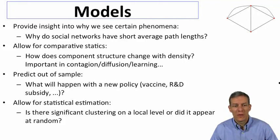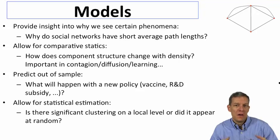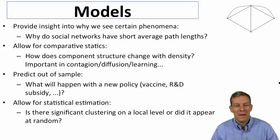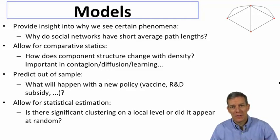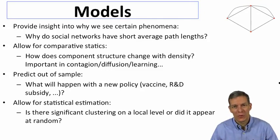The models will also allow for statistical estimation. If we want to understand, for instance, is there significant clustering—are my friends friends with each other—does that happen because of some social force or is it happening just at random? We can test models, so we can take models and then ask, does it appear that this happened at random or does it appear that something else was going on? There'll be statistical tests that we can use once we have models for analyzing that kind of question.